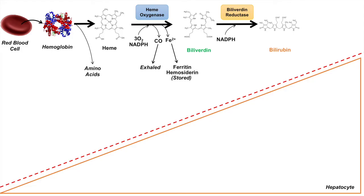Once you have bilirubin, it is actually lipophilic — not hydrophilic in nature — so it needs to be conjugated. When you have bilirubin in your bloodstream, it has a hard time being transported through the blood because blood is an aqueous solution. So bilirubin will have to be bound to albumin, which is the most abundant protein in your serum, and then transported in the blood.